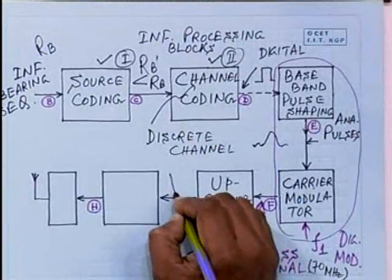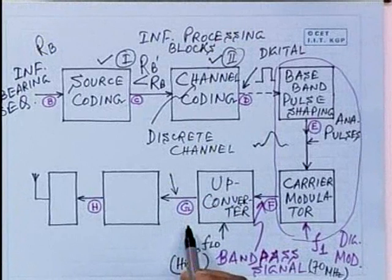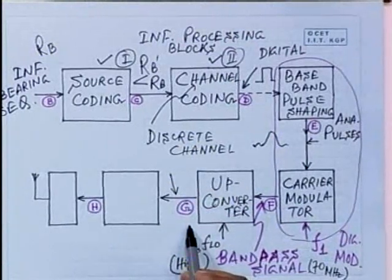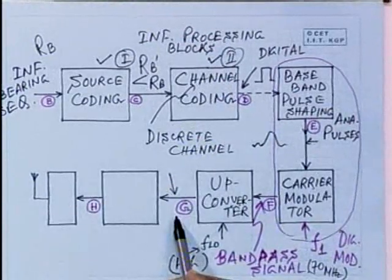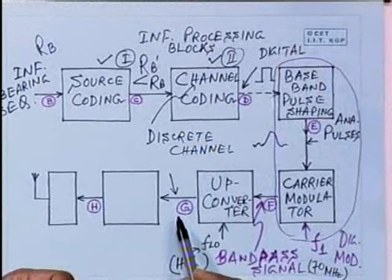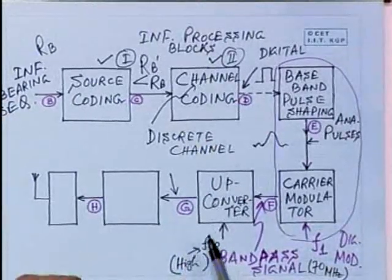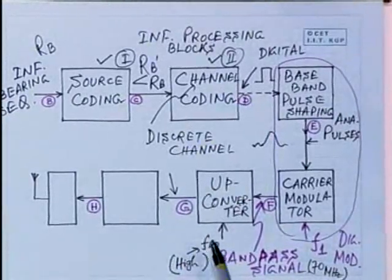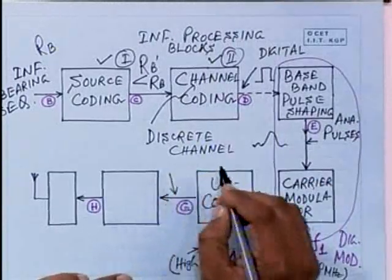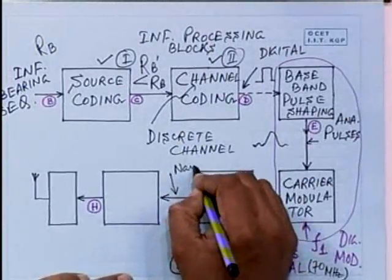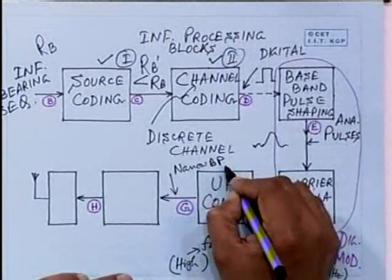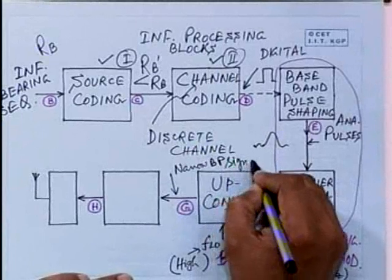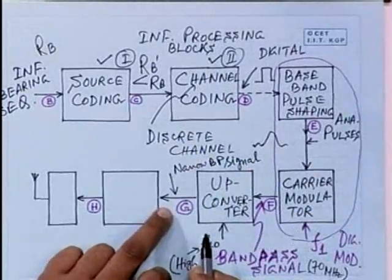At output point G, the signal is still a narrow bandpass signal. In fact, the bandwidth is even narrower in comparison to the center frequency, so the output is a narrow bandpass signal. I am writing BP for bandpass — it is a narrow bandpass signal at point G. This signal is not sufficient for direct transmission.